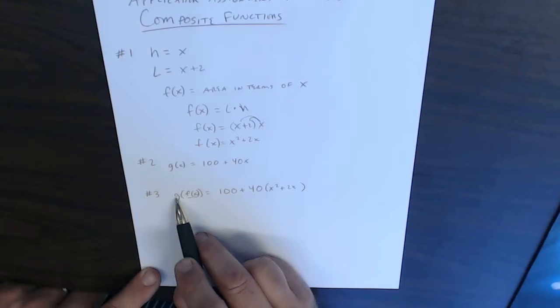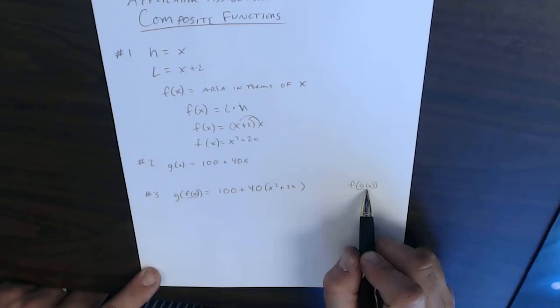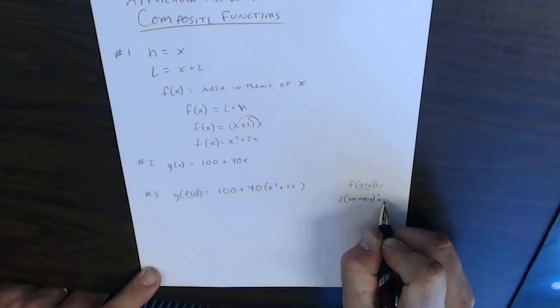If for some reason they ask for f of g of x, we would do the same thing. We would plug in the g of x function, and we plug in the x for the f of x function. So in this case, it would be 100 plus 40x squared, plus 100 plus 40x, and then we would simplify that.